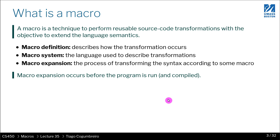A macro is a technique to perform reusable source-to-source transformation. The objective is to extend the language semantics. You can think of it as a compiler pass that the user is allowed to extend. You'll have your Racket code and there will be a way to describe how to transform that code — maybe to generate something or to emit something. We're going to see a few examples of how to use the macro system to generate code in Racket.